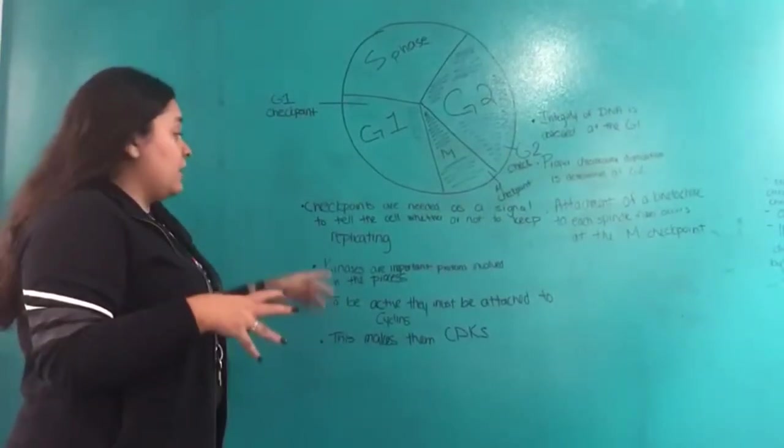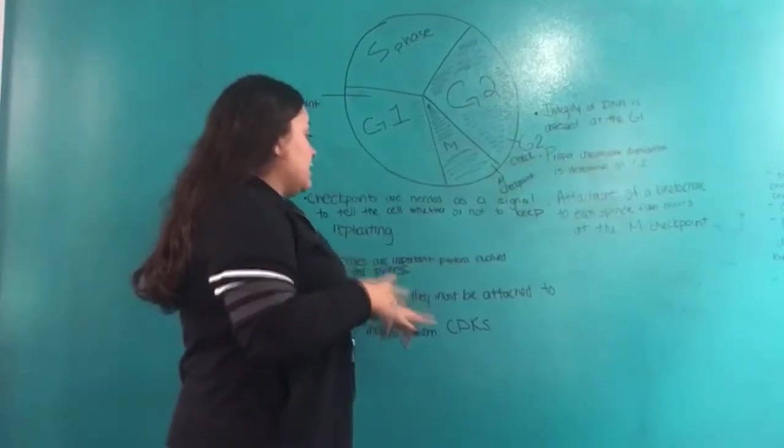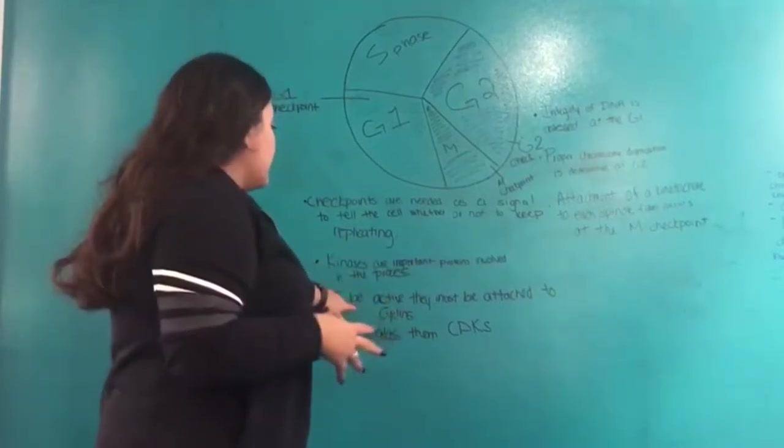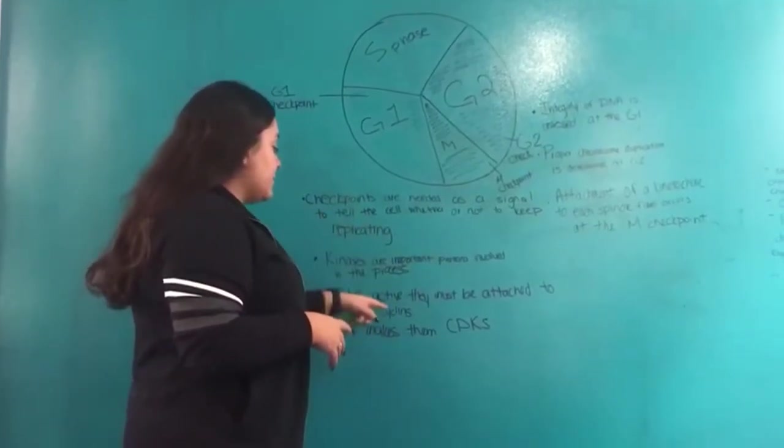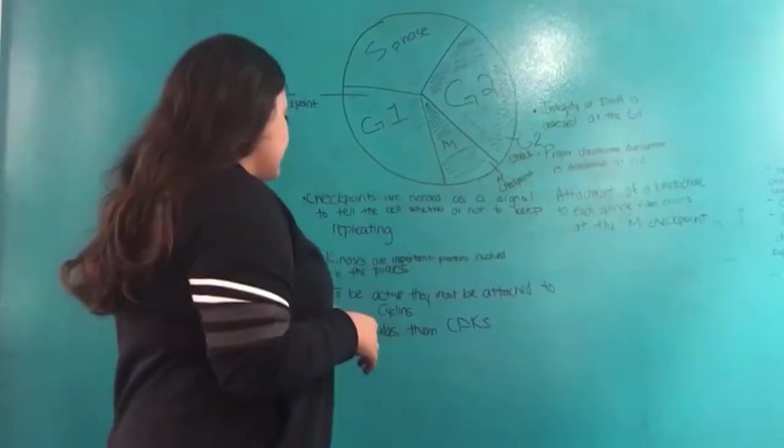An important component of the checkpoints are the kinases. This is because they allow for the process to keep going. And in order to become active, these kinases must be attached to a cyclin. This makes them CDKs, which are cyclin-dependent kinases.